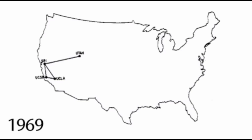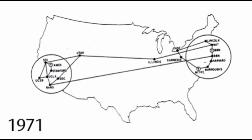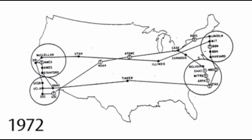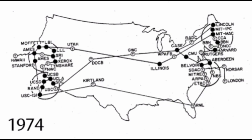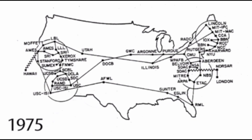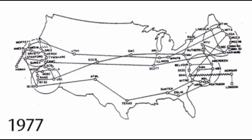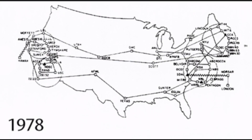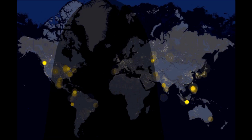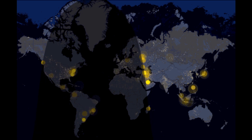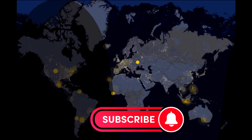In the 1970s, the Internet began to expand beyond the confines of government and academic research, with the development of the Transmission Control Protocol and the Internet Protocol. These protocols enabled different networks to communicate with each other, and the Internet began to take on its modern form.